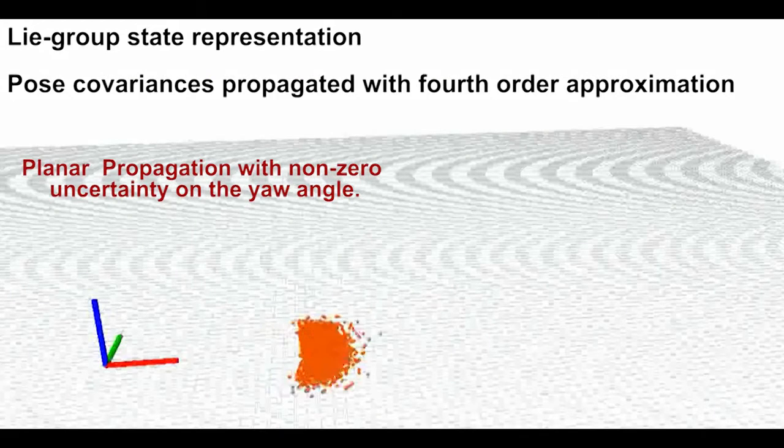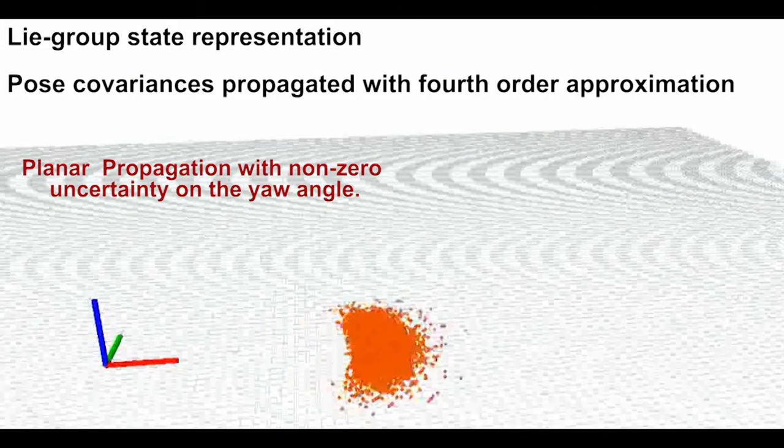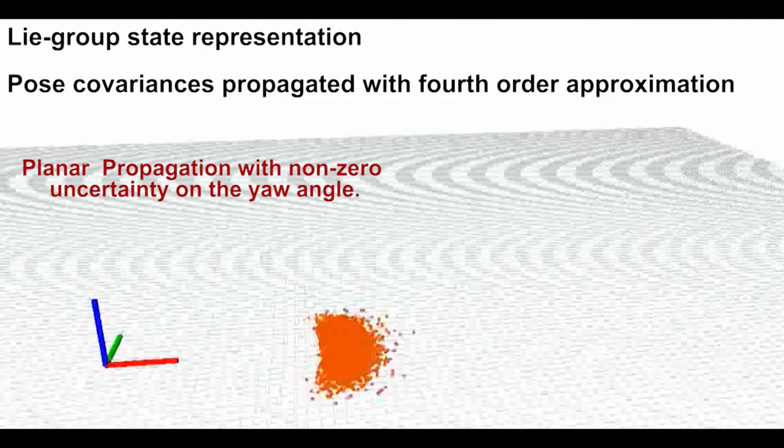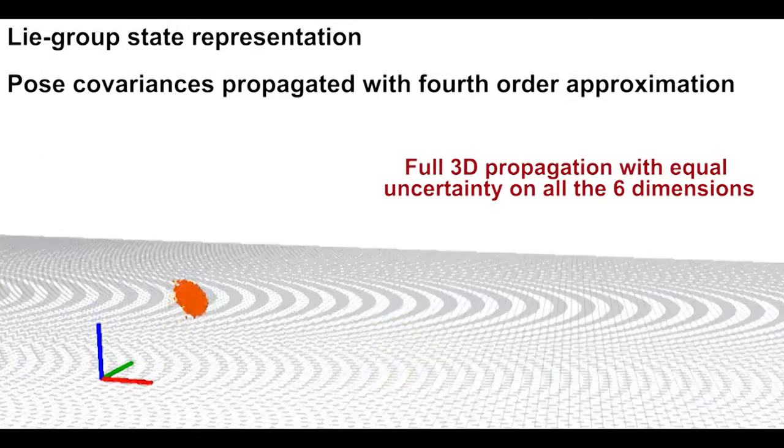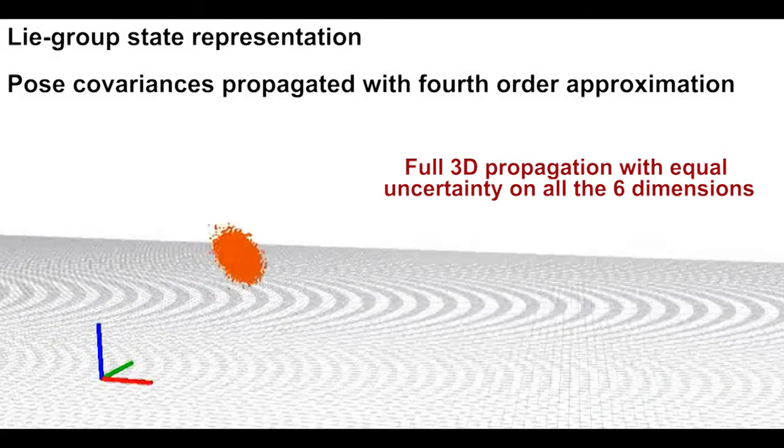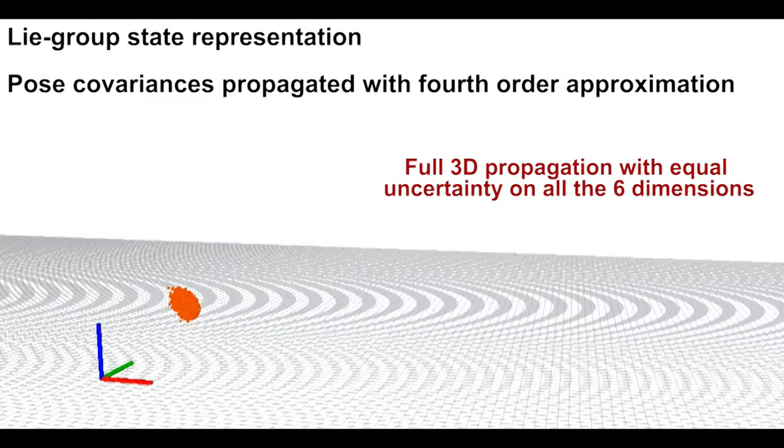To predict the pose covariance along a candidate trajectory, we need to propagate the uncertainties. We represent the robot state as a member of a Lie group. This allows us to propagate the state covariance with a fourth-order approximation, achieving better estimates with respect to standard filtering techniques.